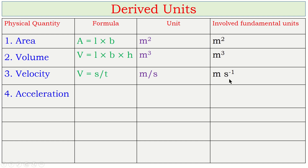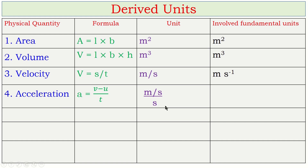Next: acceleration. Acceleration = change in velocity ÷ time taken. Its unit is meter per second for velocity, divided by second for time, giving meter per second squared. Since both seconds are in the denominator, it becomes m·s⁻², meaning meter is divided by second twice.